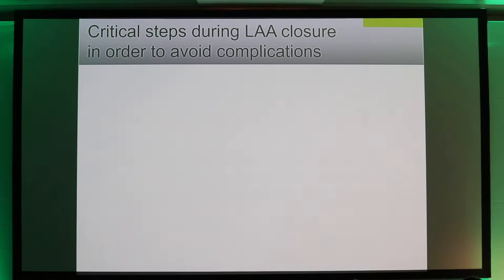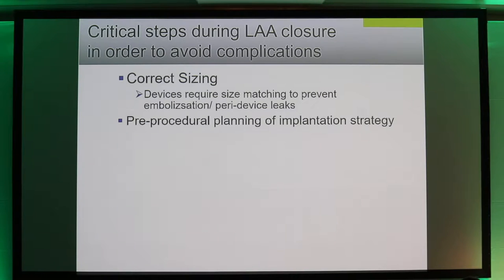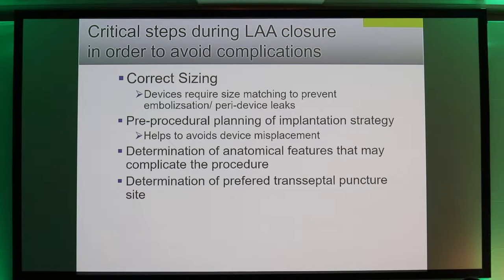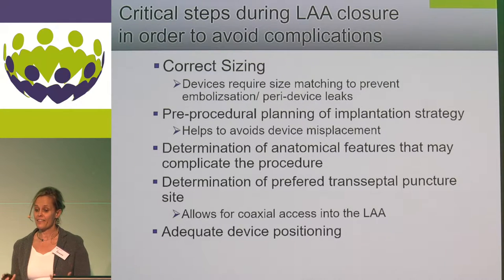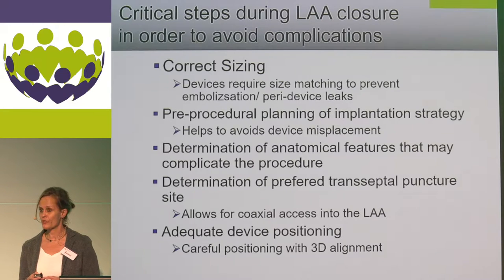What are the critical steps during LAA closure in order to avoid complications? We want to do correct sizing, because devices require size matching to prevent embolization or peri-device leaks. We should do pre-procedural planning of the implantation strategy to help avoid device misplacement. We should determine anatomical features that may complicate our procedures, and determine the preferred transeptal puncture site, which allows for coaxial access into the left atrium. Finally, we want adequate device positioning with careful 3D alignment.